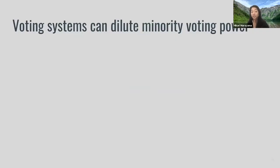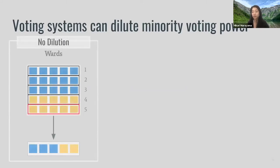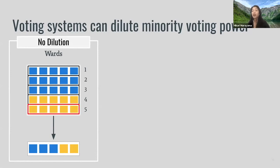Voting systems can actually dilute minority voting power. In our example, we have a population that's blue and yellow — 60% blue and 40% yellow — looking to elect five individuals for five seats. In this non-diluted case, we have five seats with wards that are horizontal rectangles, ensuring that two yellow wards can elect two yellow-preferred candidates.